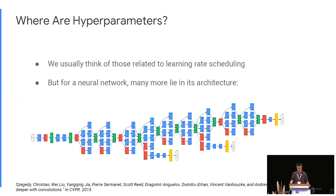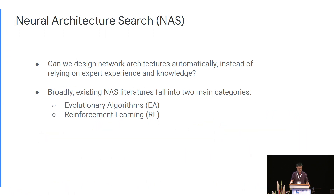For a neural network, many hyperparameters lie in its architecture. Because there are so many design choices, an inexperienced engineer will not know where to start. As a result, popular network architectures, like Inception shown here, are proposed by expert practitioners. In the spirit of AutoML and democratizing AI, we ask whether it is possible to automatically design high-quality network architectures instead of relying on expert experience and knowledge. This line of work is called Neural Architecture Search, which has gained significant interest over the past two years.